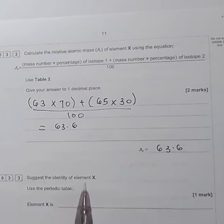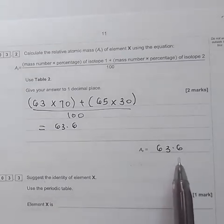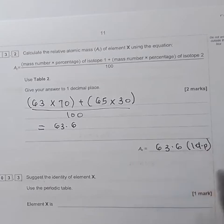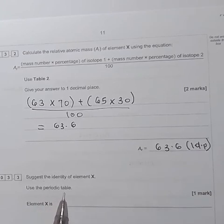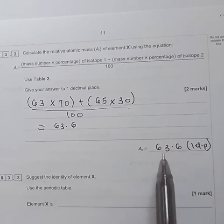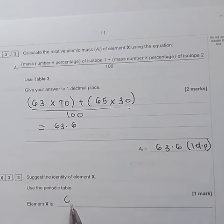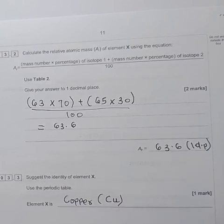Suggest the identity of element X. Use the periodic table. So when you use your periodic table, you will find 63.6. This is to 1 decimal place. So when you look at your periodic table, the closest mass number that we found for 63.6 will be 64, which belongs to copper.